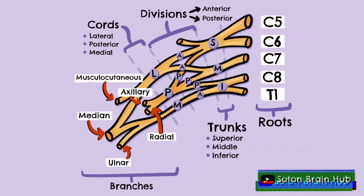Let's now see how these terminal branches are formed. The posterior cord divides into two terminal branches: the axillary nerve, which innervates the deltoid and teres minor muscles, and the radial nerve, which innervates muscles in the posterior compartment of the upper and lower arm and is responsible for nearly all extension in the arm and hand.